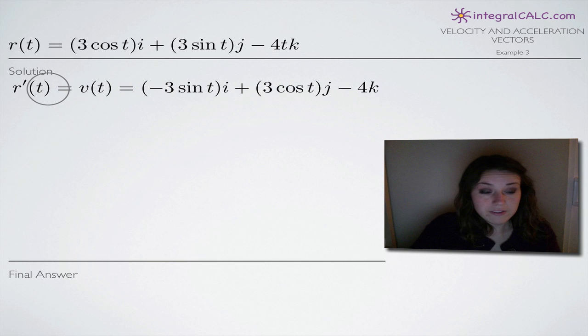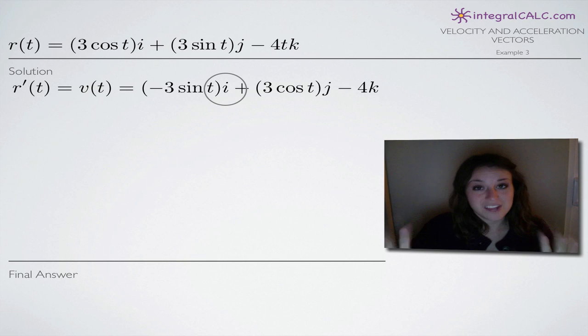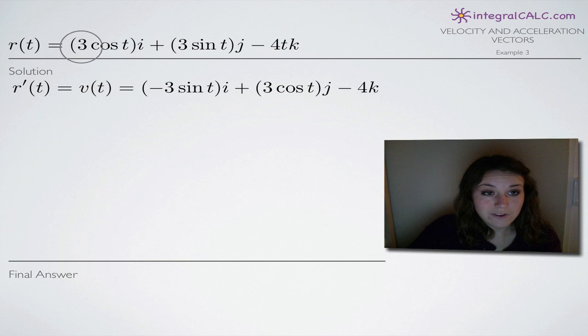The first derivative is going to be r prime of t and that's going to be equal to velocity. So we're just taking the derivative. Remember that the derivative of cos is negative sine, so that's why we have this negative sine coming out in front here. We end up with negative 3 sin t times i. And remember that when you're doing these problems, you can basically ignore completely i, j, and k. They're still there but you can almost cover them up and pretend that they're not and just take the derivative with respect to t, leaving i totally alone. So that's what we did. We took the derivative of 3 cos t, ignored i, and then just left it right where it was.